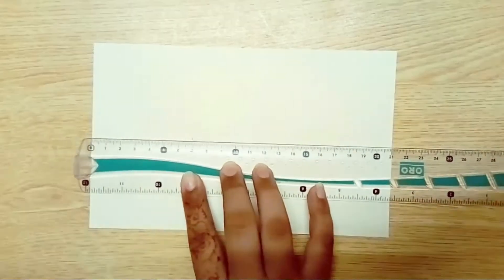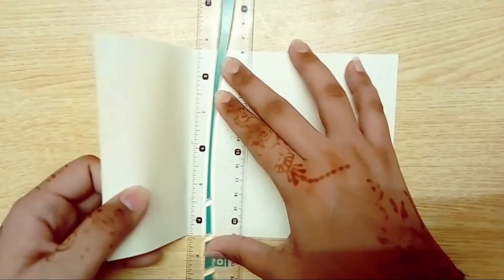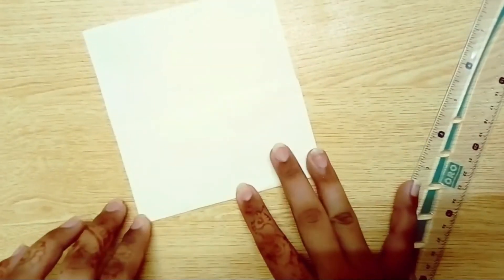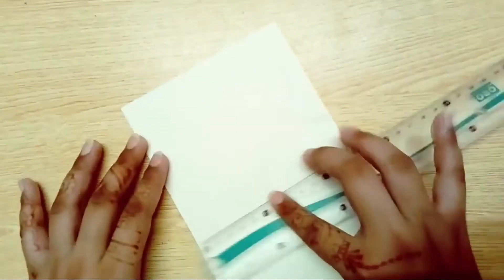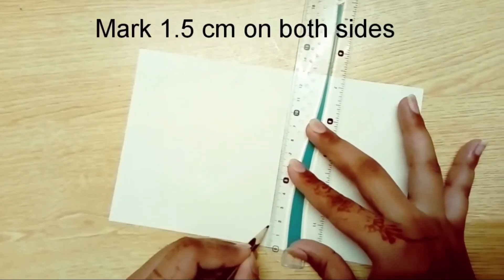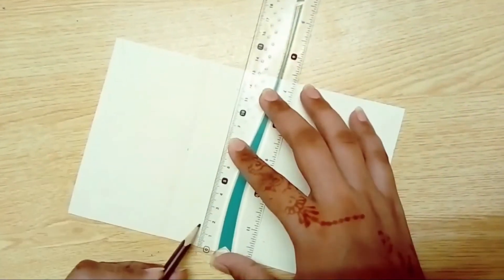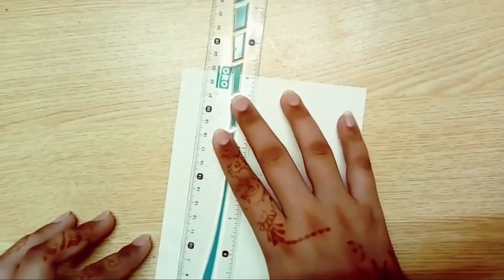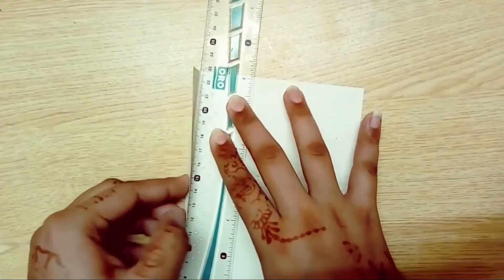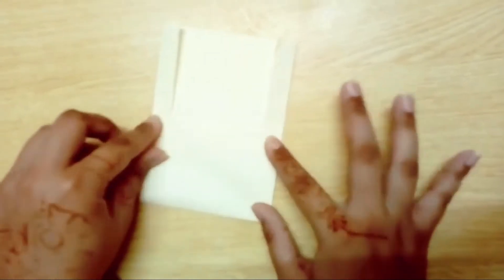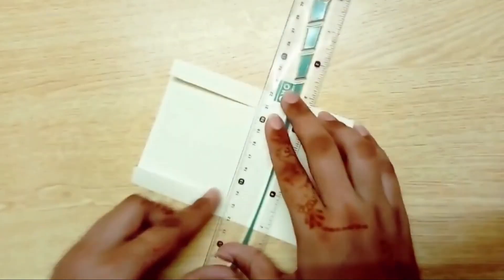Mark 7 cm on one side and fold the paper. Now mark 1.5 cm on both sides and fold the paper using a scale. Now cut the paper with the help of scissors.